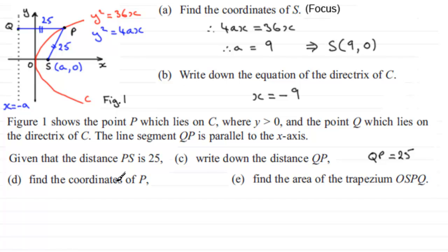Now, in part D, we've got to find the coordinates of the point P. Now, already, we know that the distance Q is away from the y-axis is 9 units, because the equation of the directrix is x = -9. So we know that this distance here is 9 units to the y-axis. But if the total distance QP is 25 units, then that leaves us with 16 units from the y-axis to P. So that tells us that at P, the x-coordinate must be equal to 16.